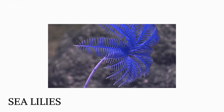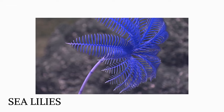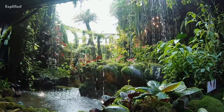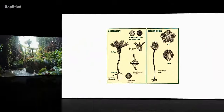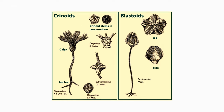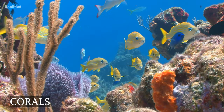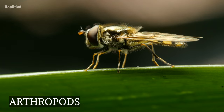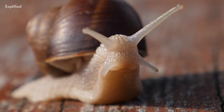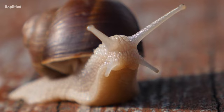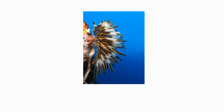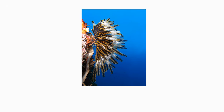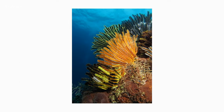Sea lilies dominated the oceans, and reptiles and plants began to sprout on land. Crinoids and blastoids, as well as corals, arthropods, and molluscs, thrived in shallow warm oceans. The Mississippian era is also known as the age of crinoids.